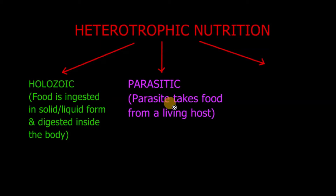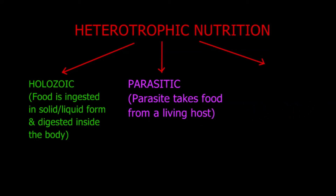The second is parasitic mode of nutrition. An organism known as a parasite takes its food from another living organism known as the host. These parasites may be of various types. They are known as ectoparasites when they derive their food from the host externally — it means they live outside the body of the host. They are known as endoparasites when they live inside the body of the host. Examples of parasites include lice, leech, tapeworms, etc.